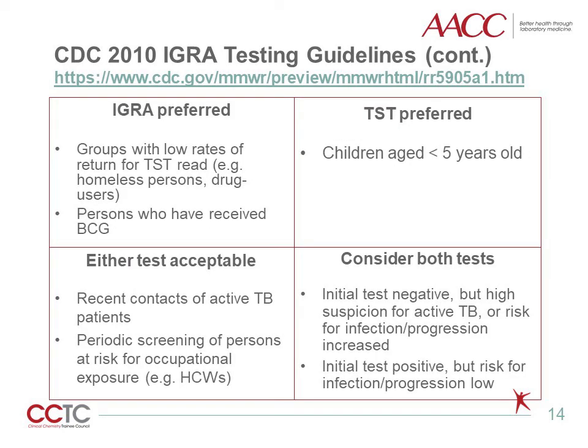CDC also offers advice on whether IGRA versus TST is preferred for particular patient groups. IGRAs are preferred over TSTs for groups with historically low rates of return for TST interpretation, such as homeless persons and drug users. IGRAs are also preferred for persons who have received BCG due to their lack of cross-reactivity with BCG. On the other hand, TSTs are preferred for children less than five years old due to IGRA's relatively low sensitivity in this age group. Either test is acceptable for recent contacts of active TB patients, as well as for periodic screening of persons at risk for occupational exposure, such as healthcare workers.